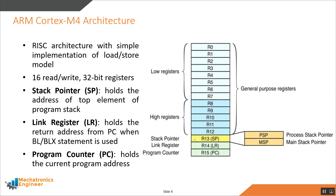Register 13, also known as the stack pointer, holds the address of the top element of the program stack. It is used automatically in push and pop instructions to manage storage and recovery of registers in the stack. Register 14, also known as the link register, holds the return address from the program counter when a branch and link or branch and link with exchange instruction is executed. And register 15, also known as the program counter, holds the current program address.